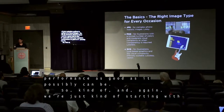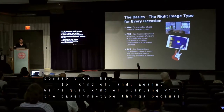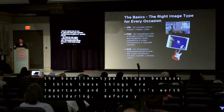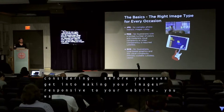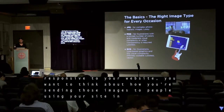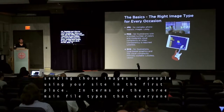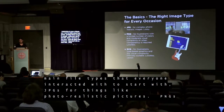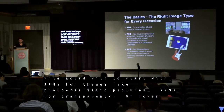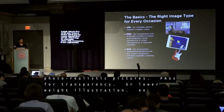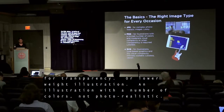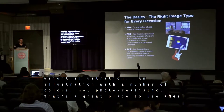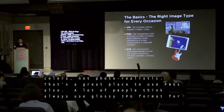These things are important and worth considering. Before you even get into making your images responsive, you really want to think about how you're sending those images to people in the first place. The three main file types start with JPEGs for photorealistic pictures, PNGs if you need transparency or for lower-weight illustration with a limited number of colors. A lot of people think to always use lossy JPEG format for basically any image that doesn't need transparency.